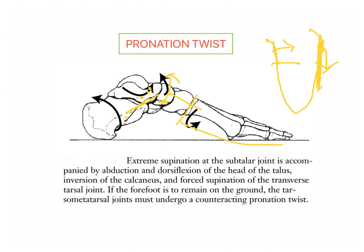The next work is carried out by the tarsometatarsal joints. The muscles controlling the first and second rays cause plantar flexion — the medial side was lifted up, and the muscles crossing the first and second rays cause them to plantar flex, bringing the foot into contact with the ground on the medial side. Ground reaction force on the lateral side causes dorsiflexion of the fourth and fifth rays.